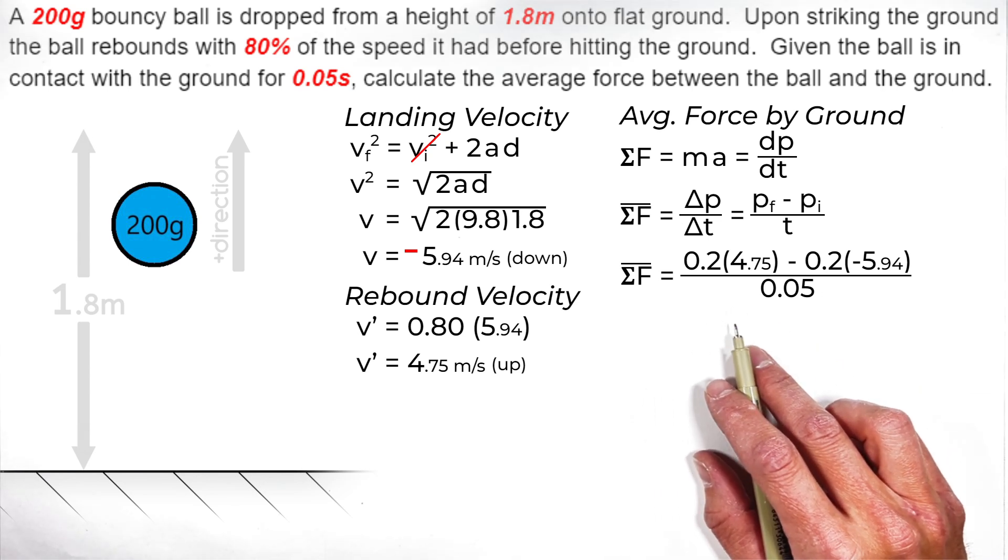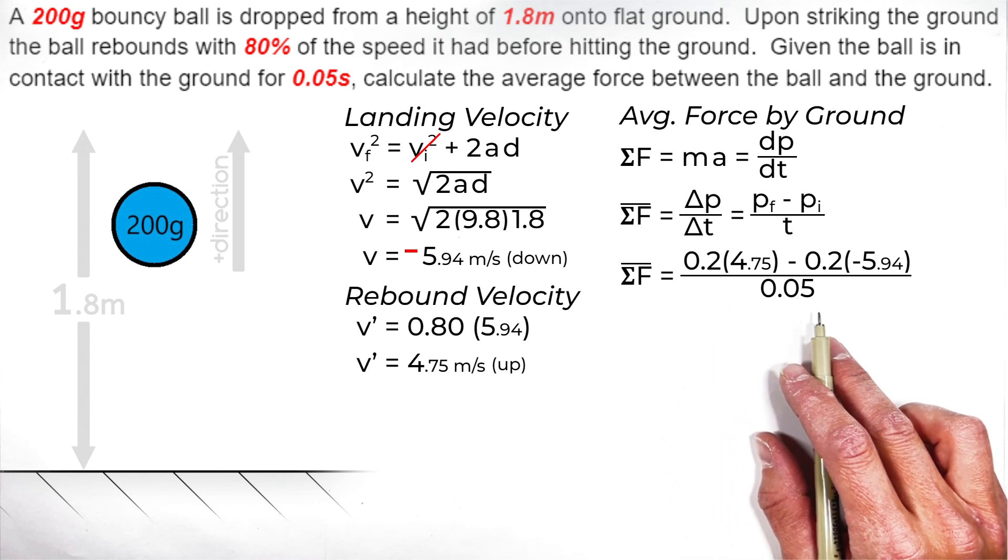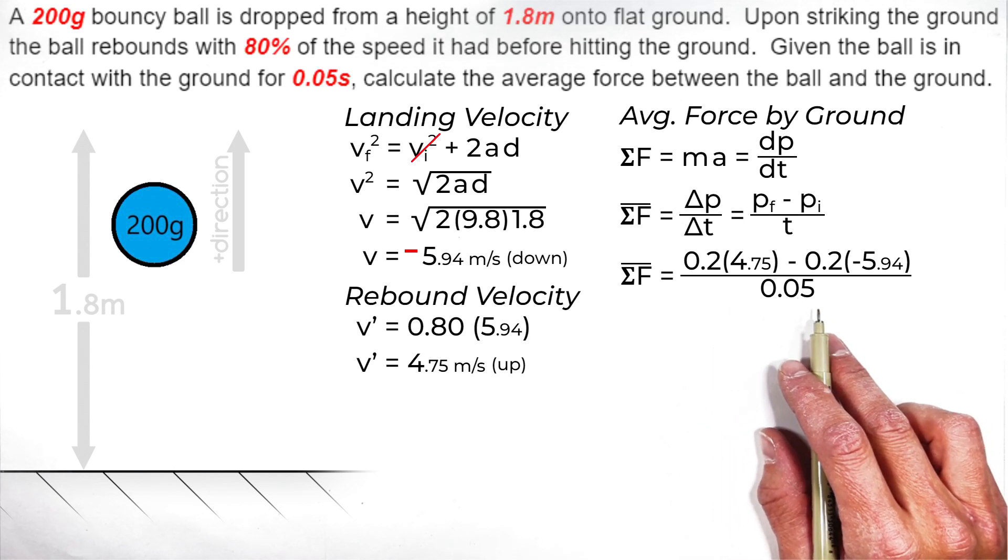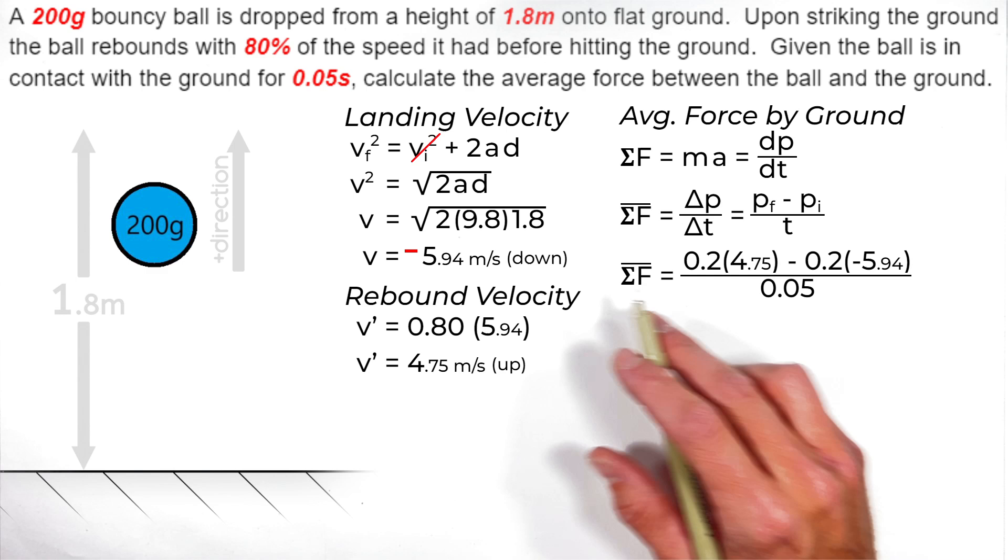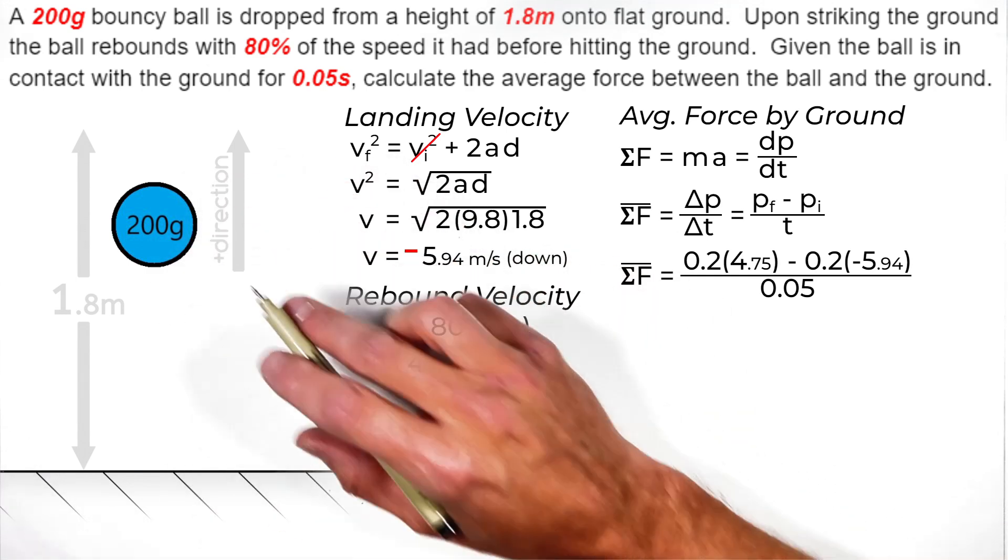So we're going to have 0.2 times 4.75, that's our final velocity, minus 0.2 times negative 5.94. Remember that negative existed because the ball was initially moving downward, not upward.